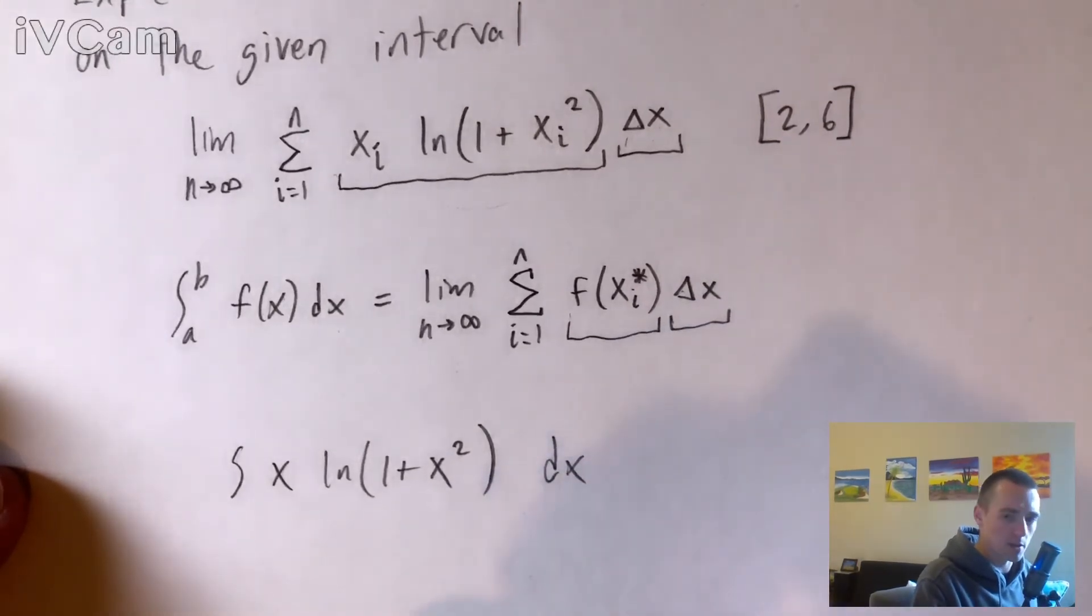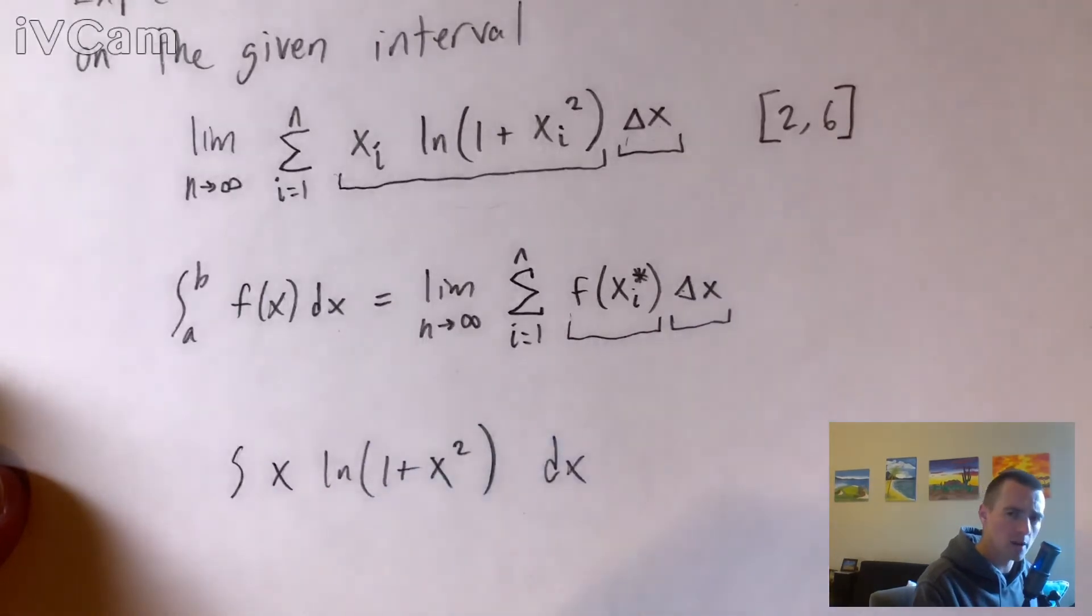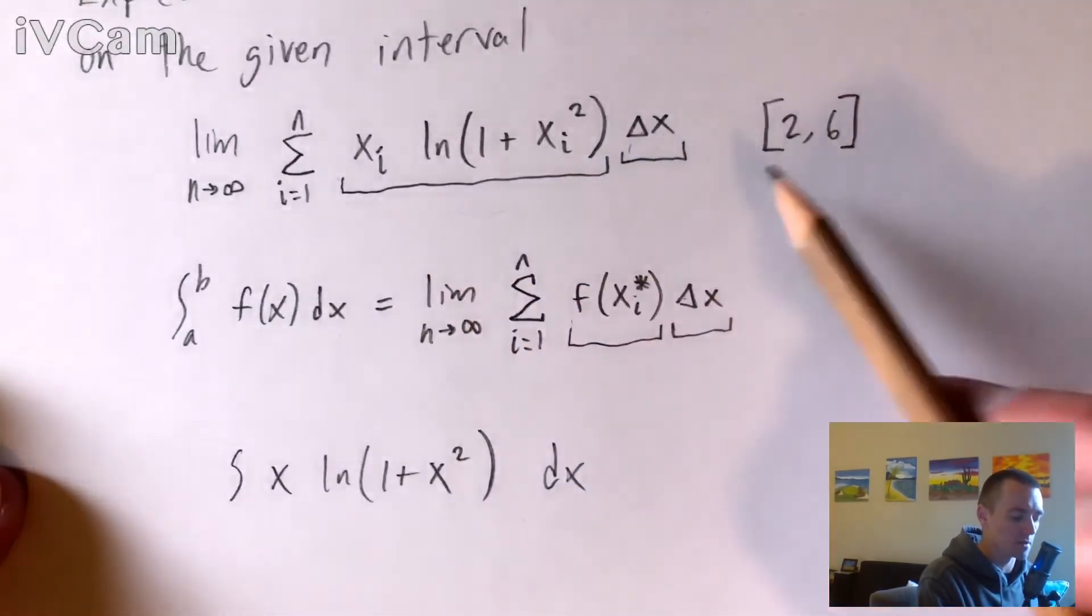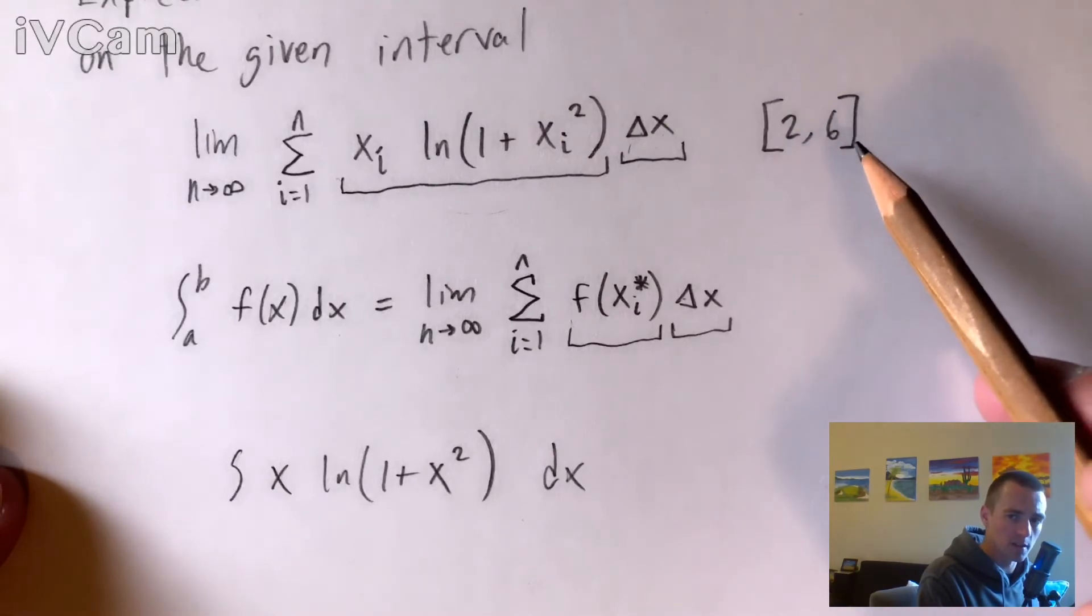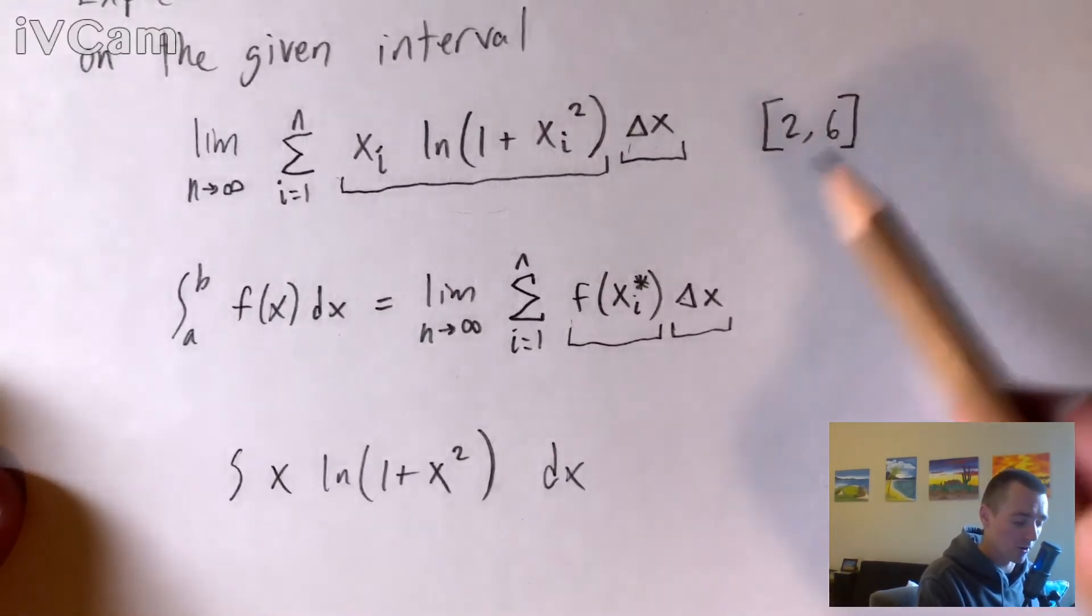So the bounds of your integral are just going to be all the x values that you're actually looking at. And since it told us that this limit and this sum is defined on the interval from x equals 2 to x equals 6, that tells us that the bounds of our integral are going to be 2 and 6.